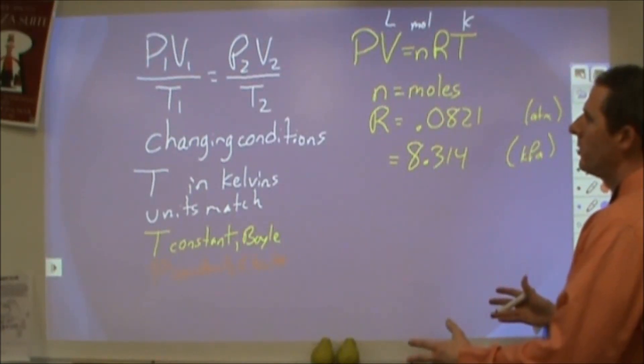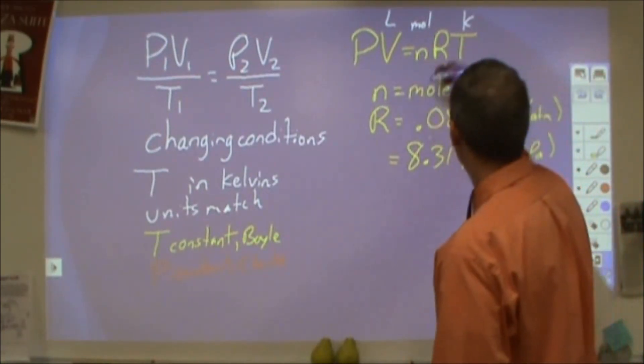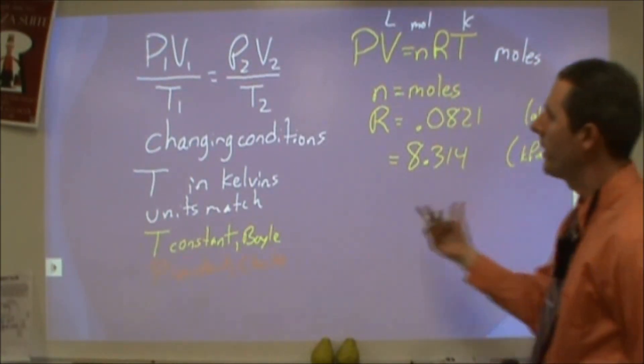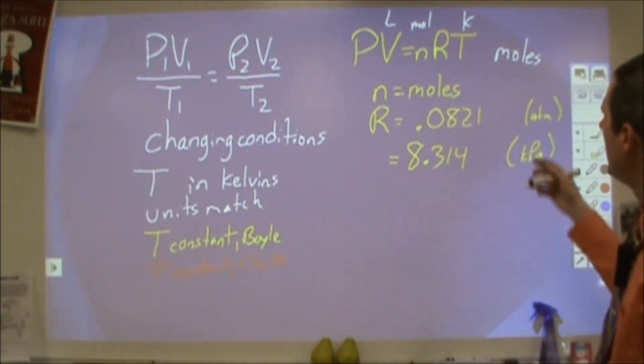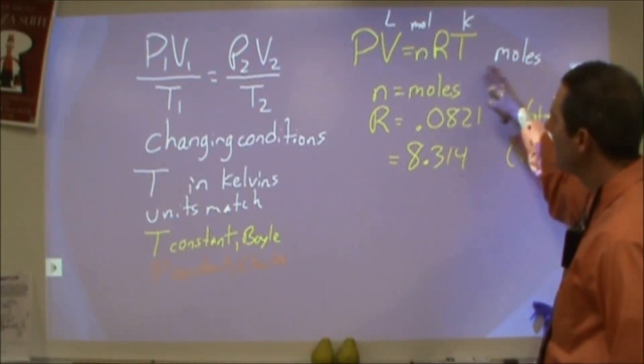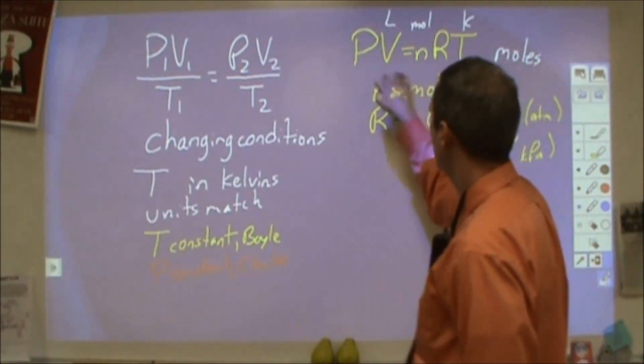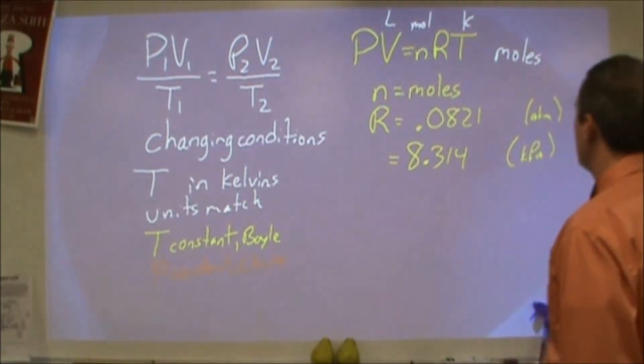So these are kind of the two equations to pick from. For this one, we're really looking for, does the problem involve moles? That's the big distinguishing factor between these two equations, is moles. So if I'm asked for or given moles, then the odds are I'm going to be using that equation. I'm going to be using the PV equals NRT.